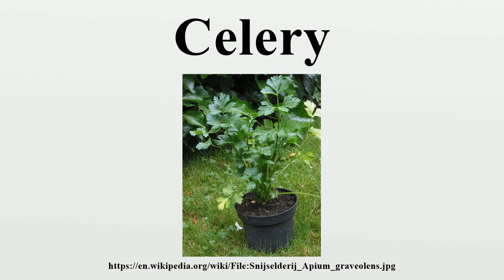In North America, commercial production of celery is dominated by the cultivar called "pascal" celery. Gardeners can grow a range of cultivars, many of which differ from the wild species mainly in having stouter leaf stems. They are ranged under two classes, white and red. The stalks grow in tight, straight, parallel bunches, and are typically marketed fresh that way, without roots and just a little green leaf remaining.